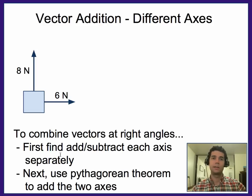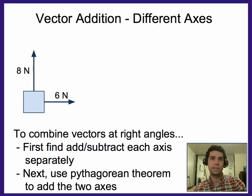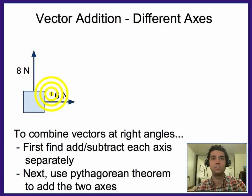So the goal here is first find the, or add or subtract the vectors on each axis separately, and that's how we got to this point. And then now what you do is you'd use the Pythagorean theorem to add these two together.